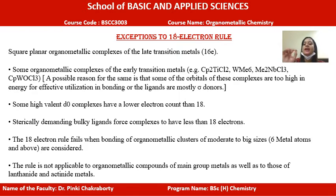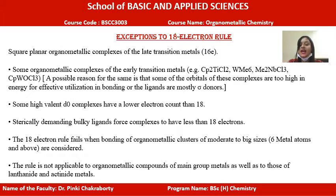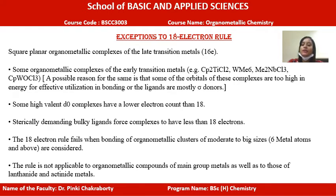The fourth exception is that the 18 electron rule cannot explain the stability of organometallic clusters — those clusters which have more than one metal atom, such as 6, 18, or a large number of metal atoms. The last exception is that this rule is only applicable for transition metals; it is not applicable for main group elements or any lanthanide or actinide series organometallic compounds.